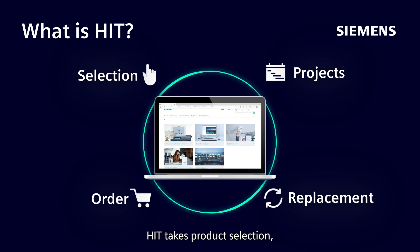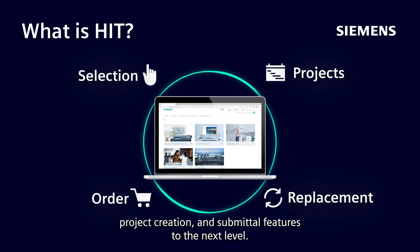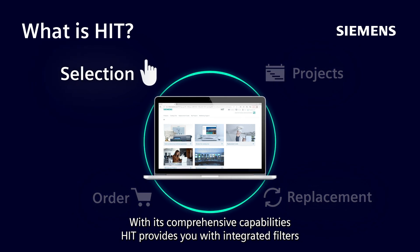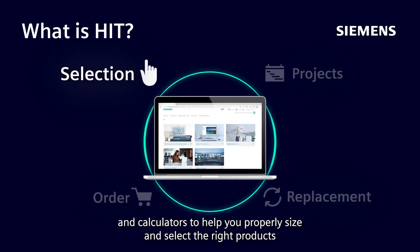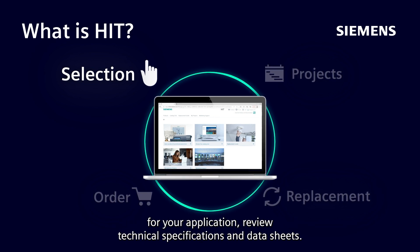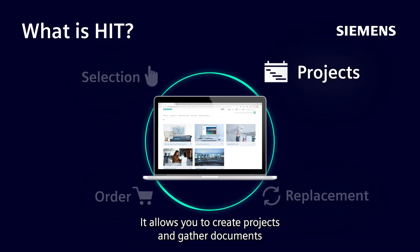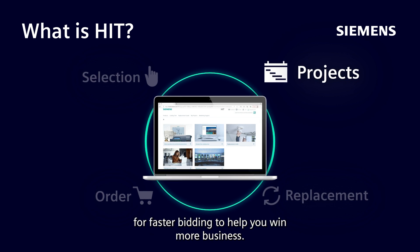HIT takes product selection, project creation and submittal features to the next level. With its comprehensive capabilities, HIT provides you with integrated filters and calculators to help you properly size and select the right products for your application, and review technical specifications and data sheets.